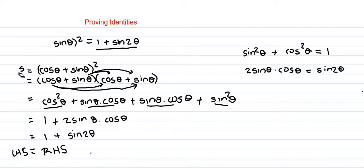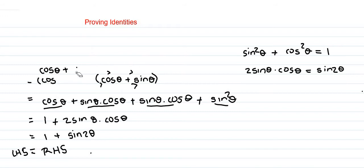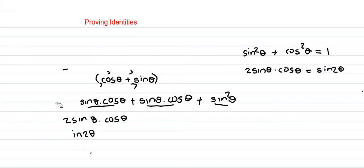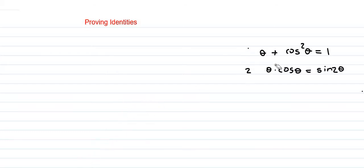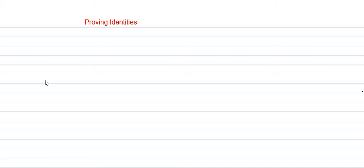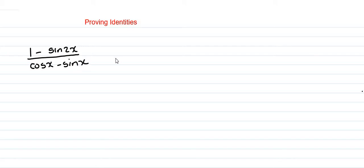Let's go back and take a look at the next identity. Number two: prove that one minus sin 2x, all over cos x minus sine x, equals sine x minus cos x.